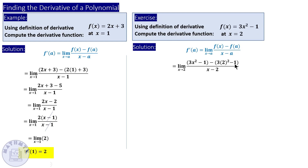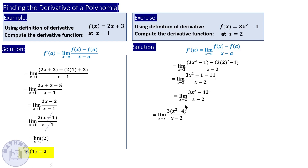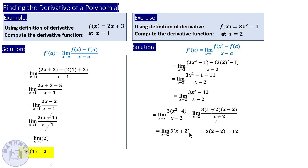Distribute the negative sign and combine the numbers. Take 3 as a common factor, then factor the difference of two squares: x squared minus 4 is (x minus 2)(x plus 2). The (x minus 2) cancels out, leaving 3(x plus 2). At x equals 2, this is 3 times 4, which is 12.